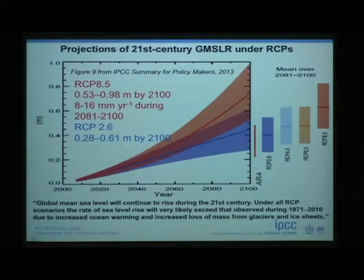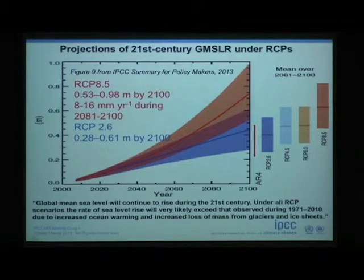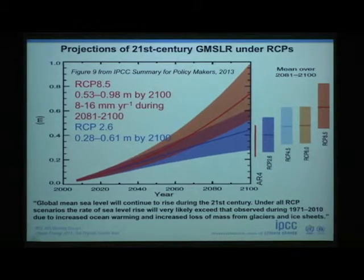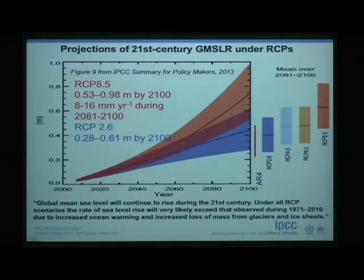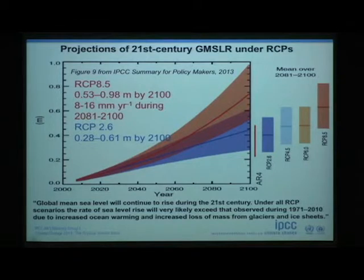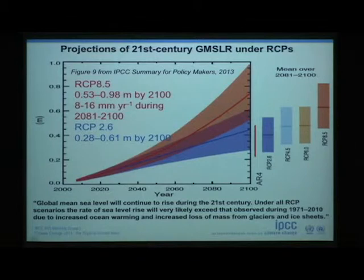One of the things done for this assessment is several groups worked on order-of-magnitude possibilities of dynamic ice response based on what we know that ice can do over periods of time that we've observed. That was added from the last assessment, and that's why the projections are nominally bigger. If you took out that dynamical response of ice, the projections of sea level rise from this assessment would almost be identical to what it was in the last assessment.